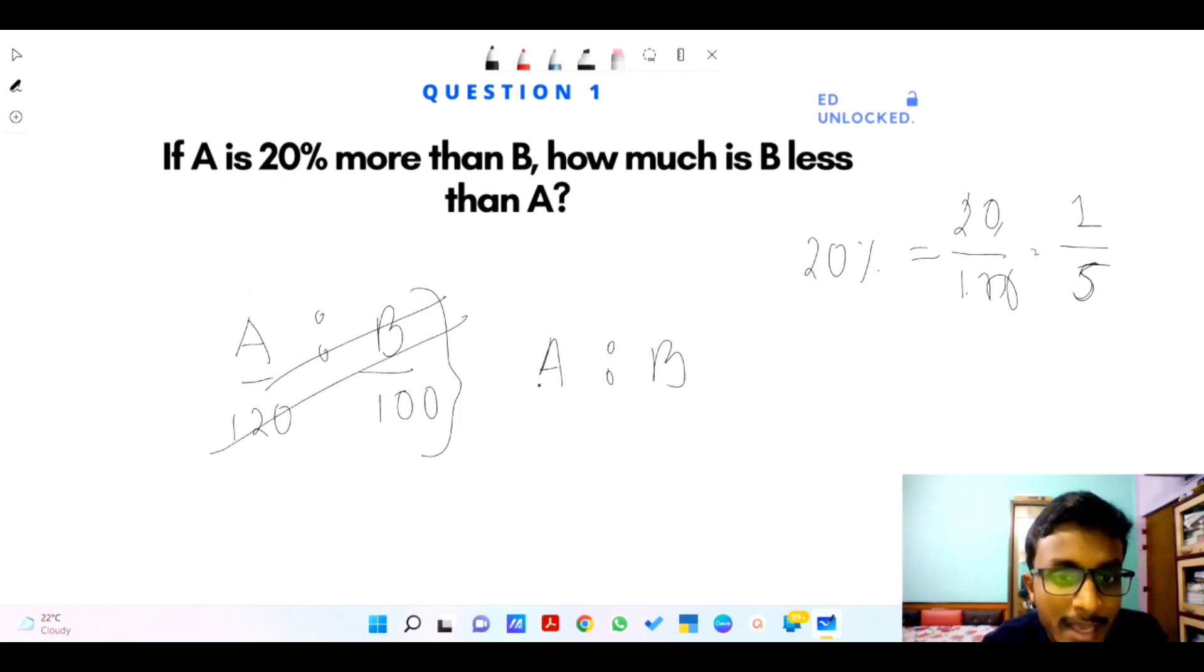So our base will be 5 and one more will be 6. Five plus one is six. Five is to six, six is to five.